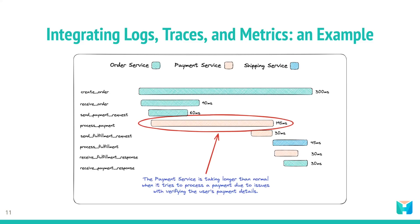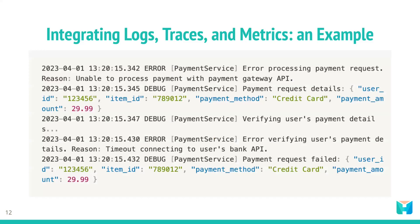The developer decides to check the logs associated with the service in question. In the logs, the developer sees a large number of errors related to the payment gateway API being used by the service. The logs also show that the payment gateway API has recently changed its authentication method, which may be causing the errors. Based on this information, the developer updates the service to use the new authentication method for the payment gateway API, deploys the updated service to production, and monitors the application's metrics, traces, and logs to verify the issue has been resolved.